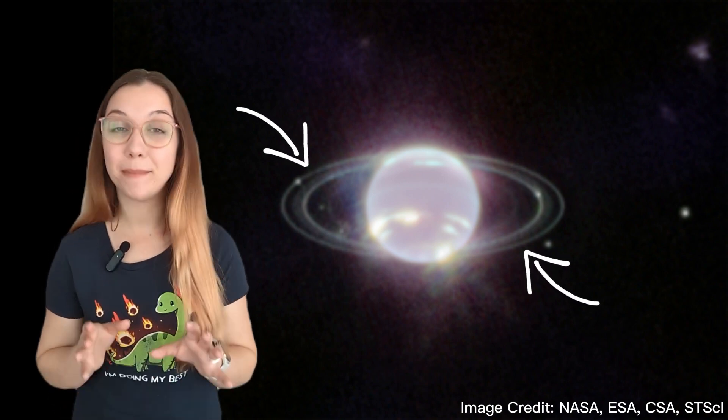Yes, that's what I said. The two brightest rings we have seen with Voyager 2 before, but if you look closely you can see some faint dust rings that we have never seen before.